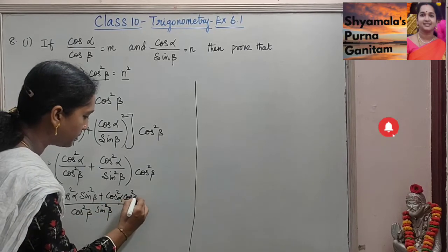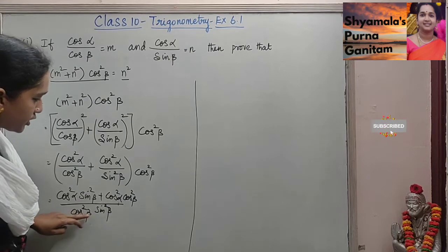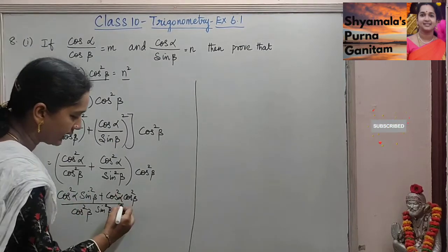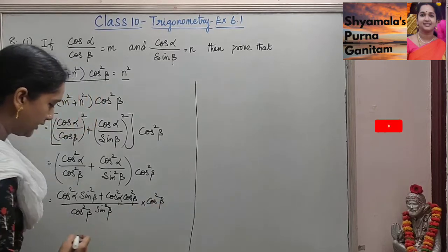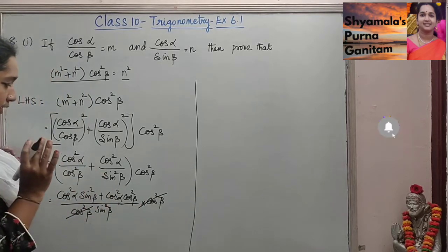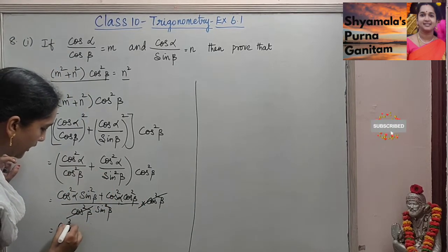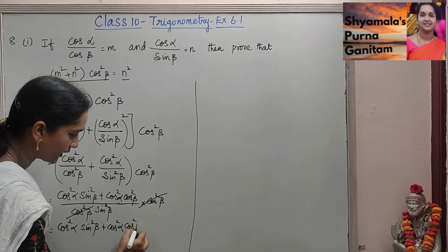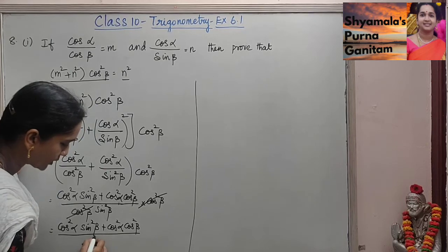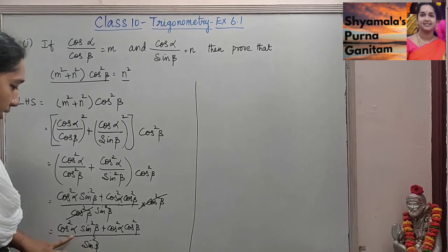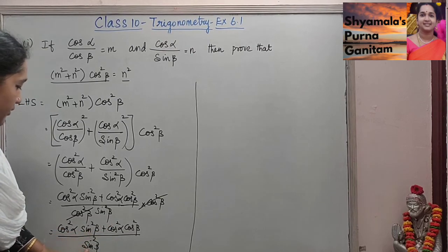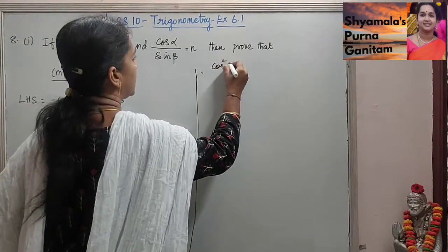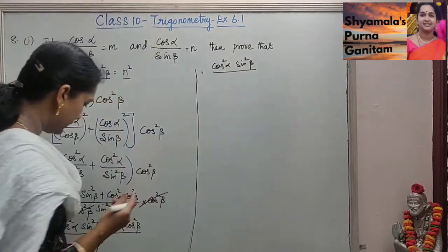This is the numerator. Sin squared β is there, and cos squared β into cos squared α will be the other term in the numerator. Here we have cos squared β on this side as well, so that will get cancelled. This gives us cos squared α sin squared β plus cos squared α into cos squared β, divided by sin squared β.